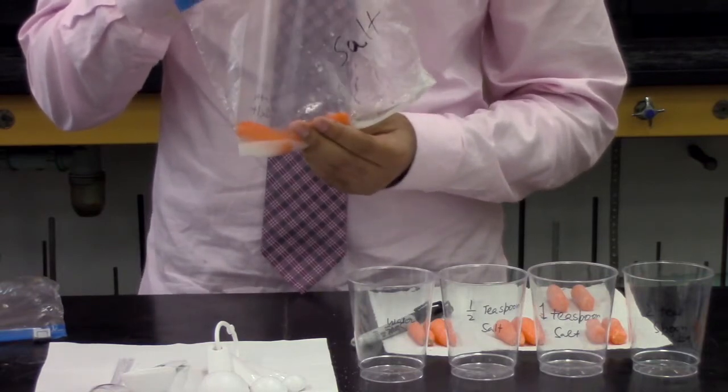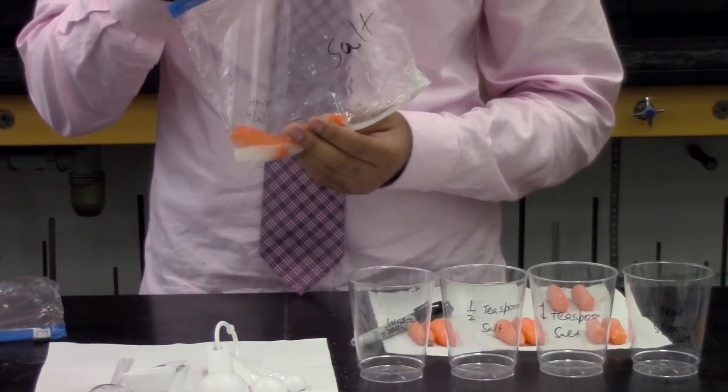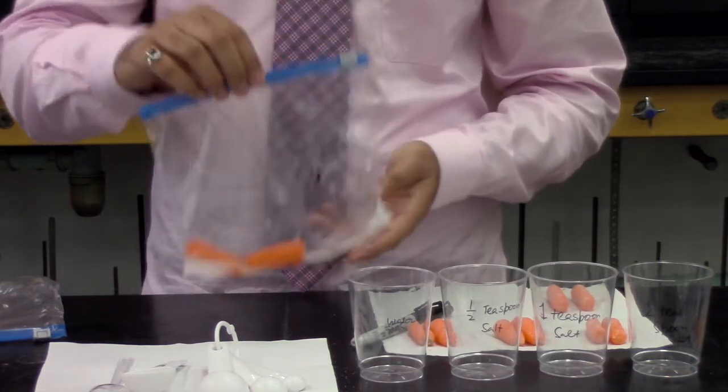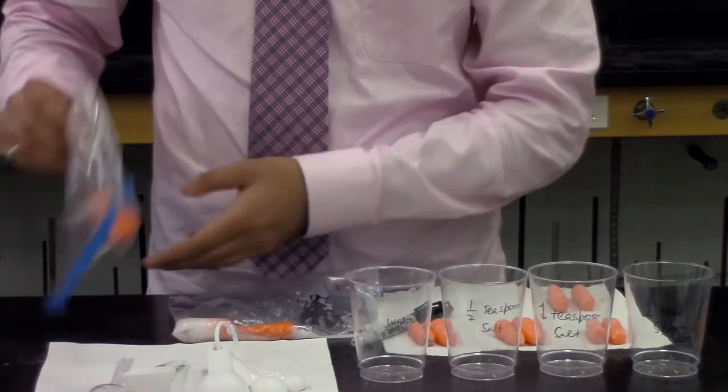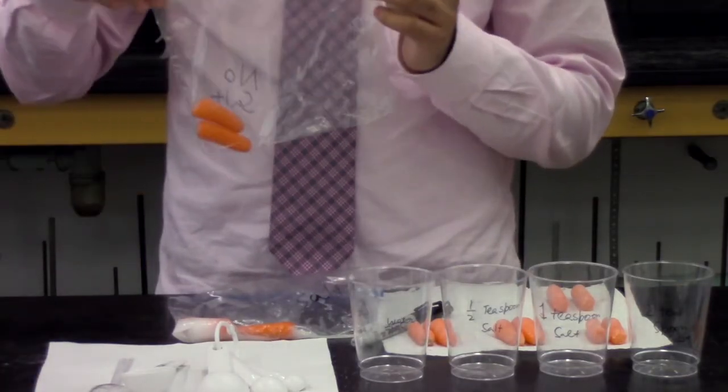Salt contains a higher concentration of sodium ions than carrots, so the water moves out from the carrots. Whereas on the other hand, the carrots in the bag labeled no salt, the carrots will not bend at all.